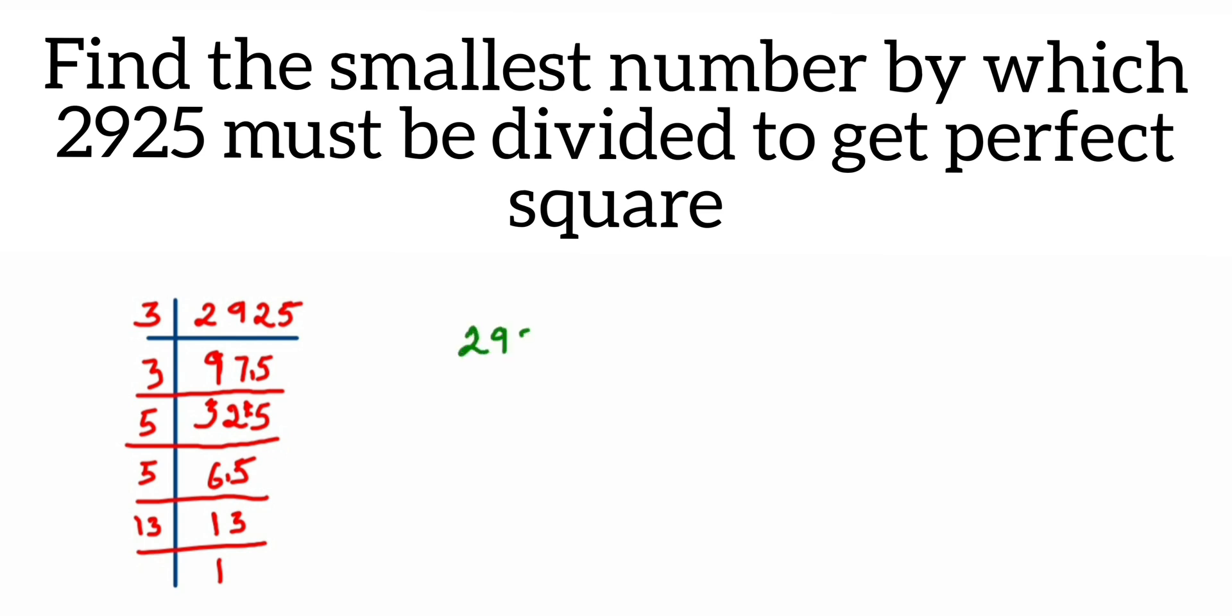So 2925 can be written as: write all the factors, that is 3 into 3, and then 5 into 5, and into 13.